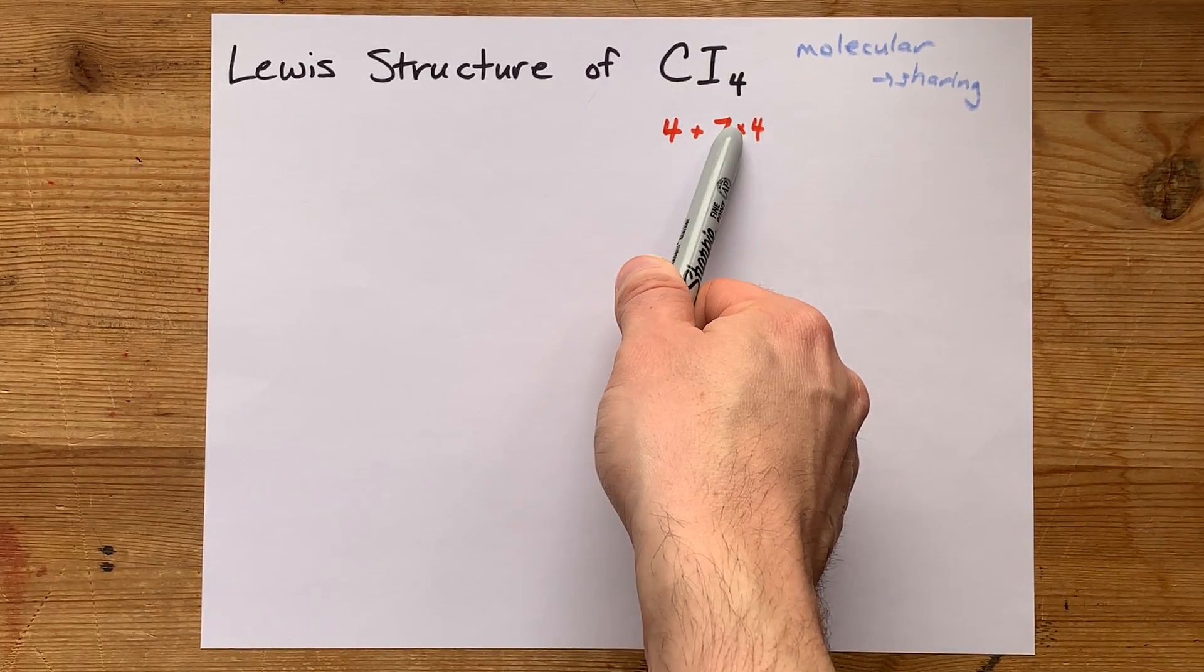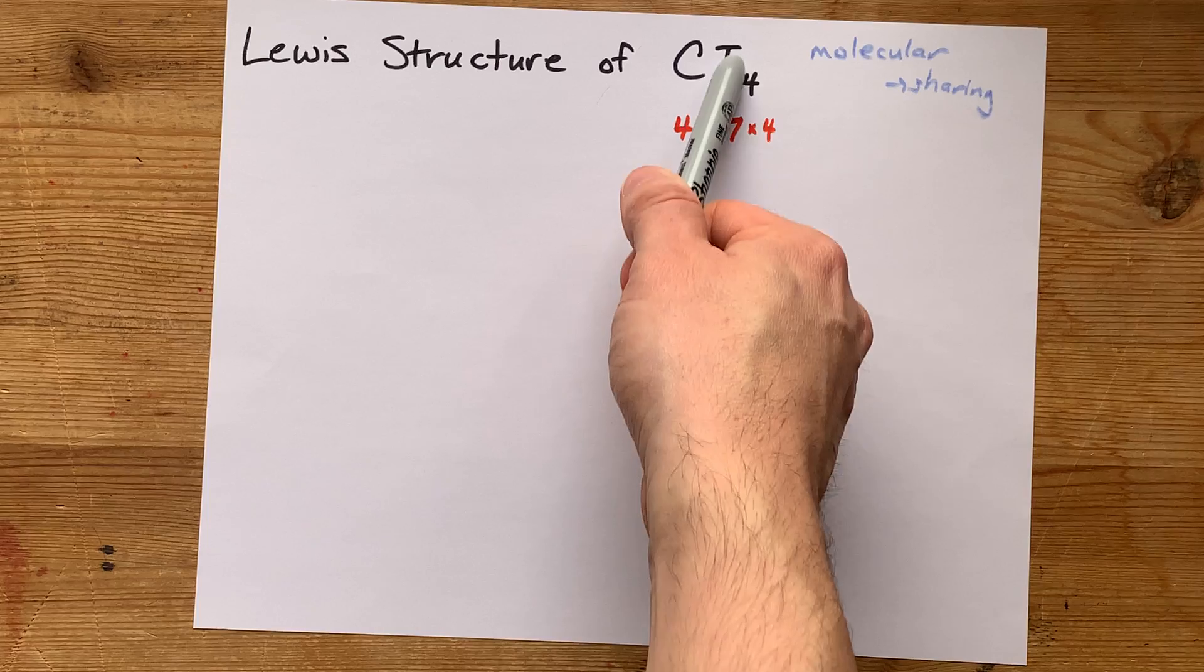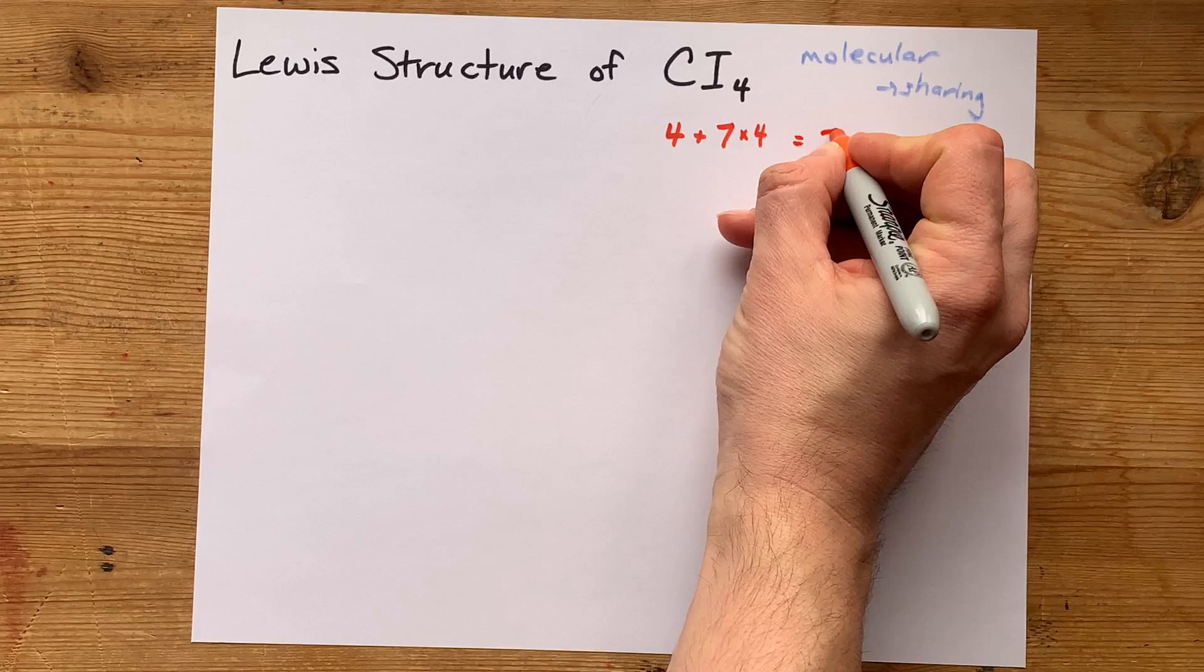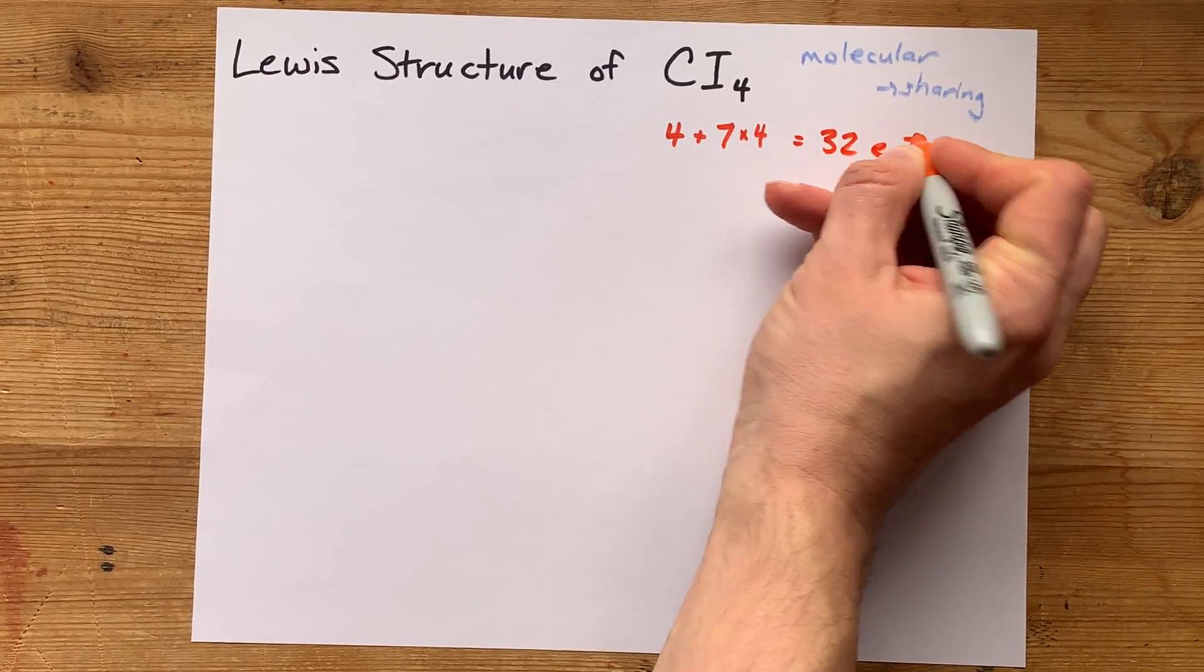So that's four times seven, or 28 electrons just from iodine, plus the four from carbon makes 32 electrons total.